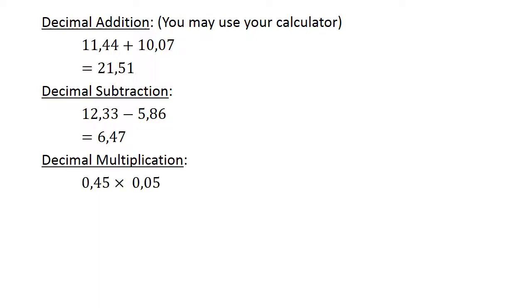Decimal multiplication. 0.45 times 0.05 equals 0.0225.